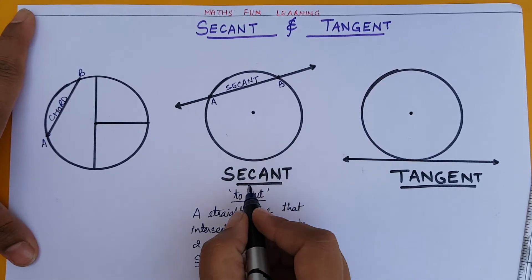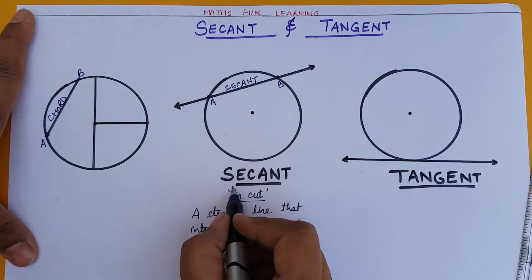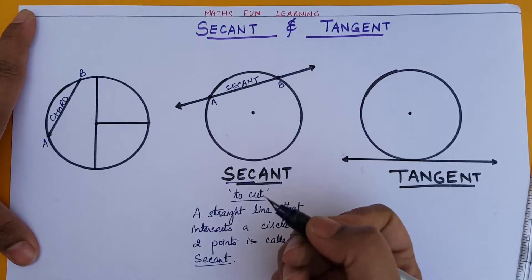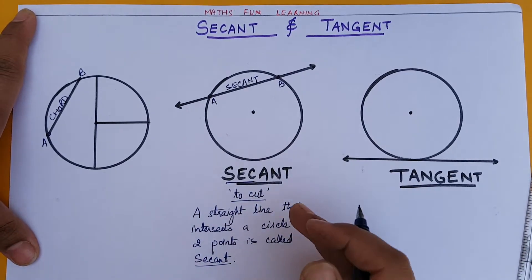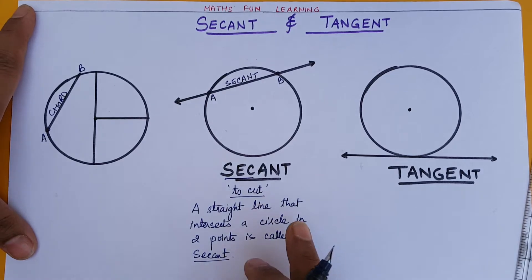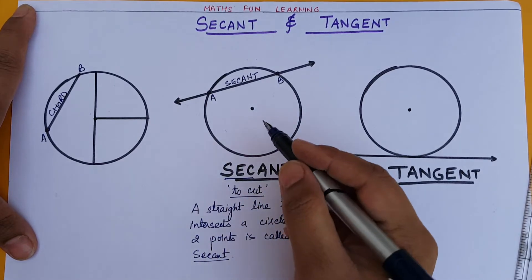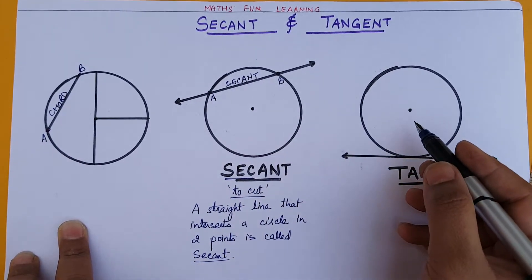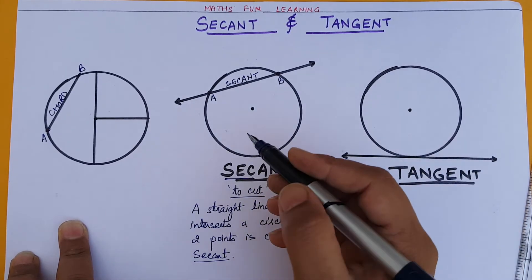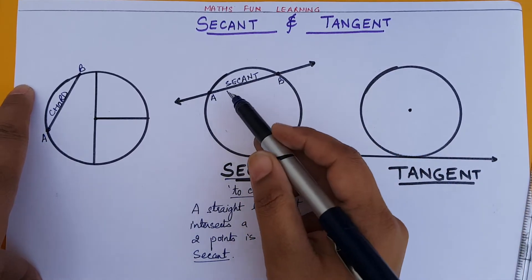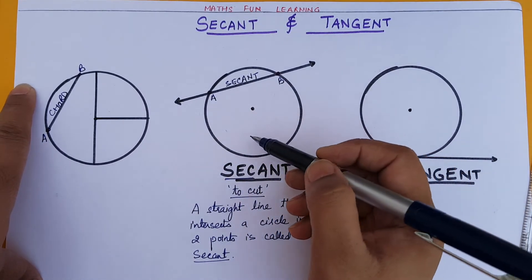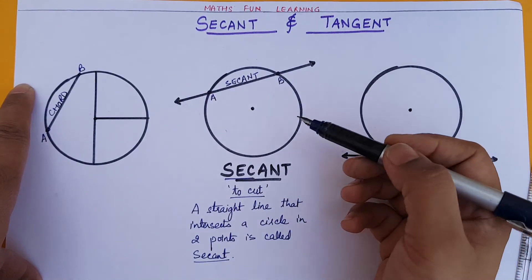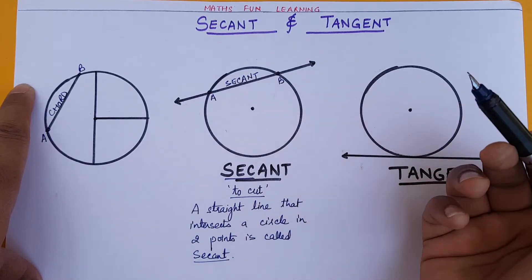Kids, to remember, 'sec' means cut — you can relate to that and never forget the secant line. How many secant lines can a circle have? It is infinite, because we cannot count them.